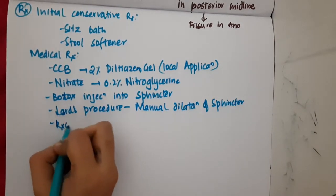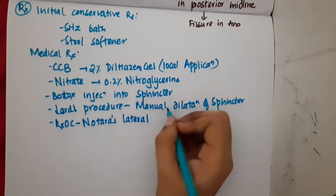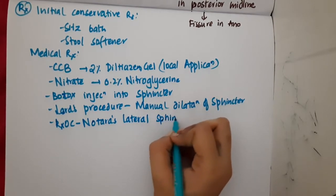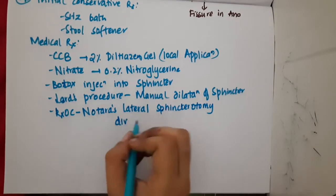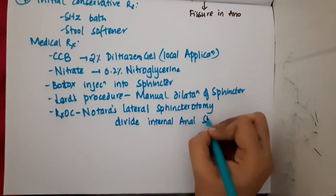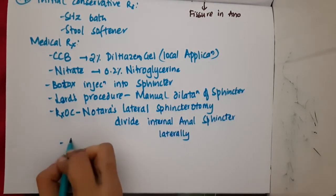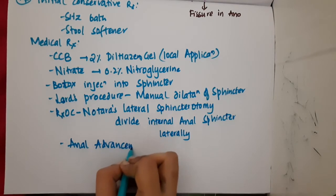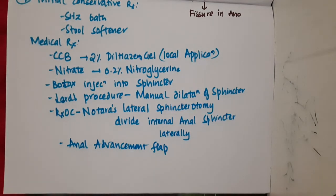The treatment of choice is lateral internal sphincterotomy. In this procedure, the internal anal sphincter is divided laterally. An anal advancement flap can also be done. These are the medical and surgical treatment options for fissure in ano. Thank you for watching.